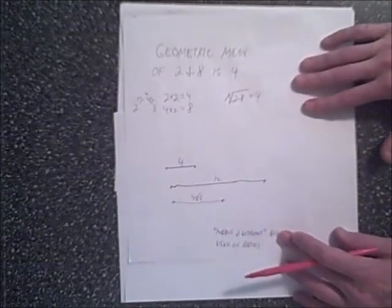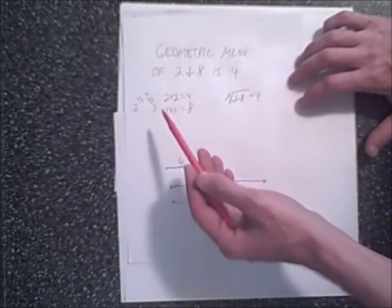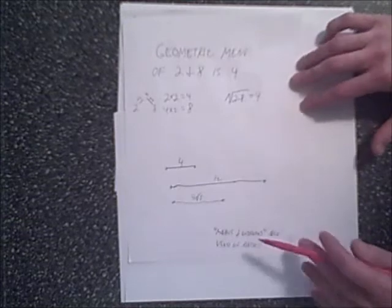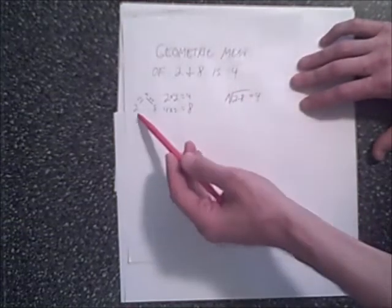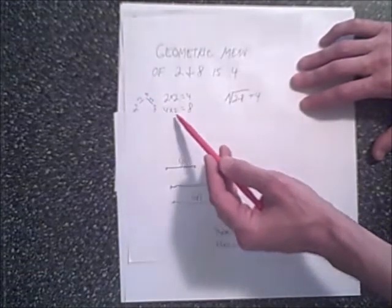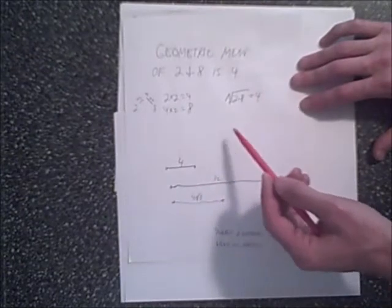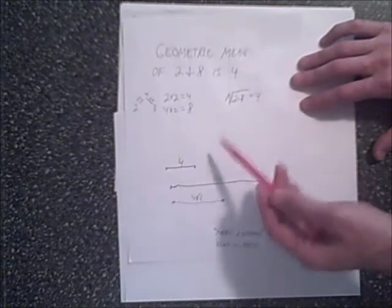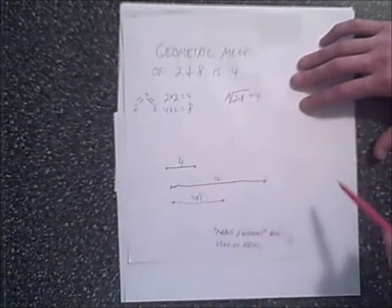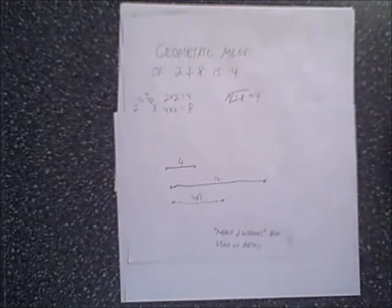The geometric mean is the point in between two numbers where going from one to the middle and then from the middle to the other number is a common ratio. For example, with 2 and 8, the geometric mean is 4 because 2 times 2 is 4, and 4 times 2 is 8. Simply put, you take the two numbers, multiply them, take the square root, and that gives you the geometric mean. In this case, 2 times 8 is 16 and the square root is 4. This has useful properties for similarity ratios, means and extremes, and other topics in geometry.